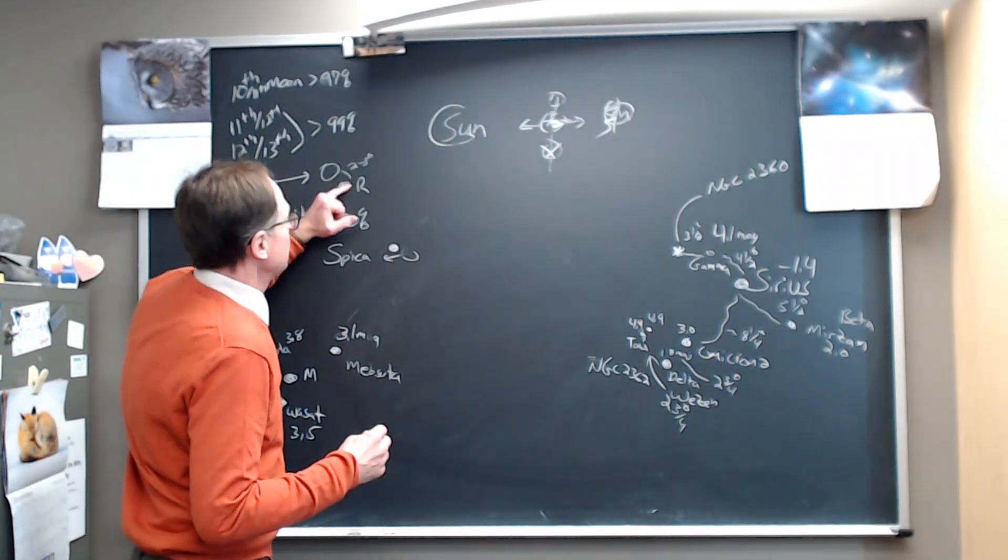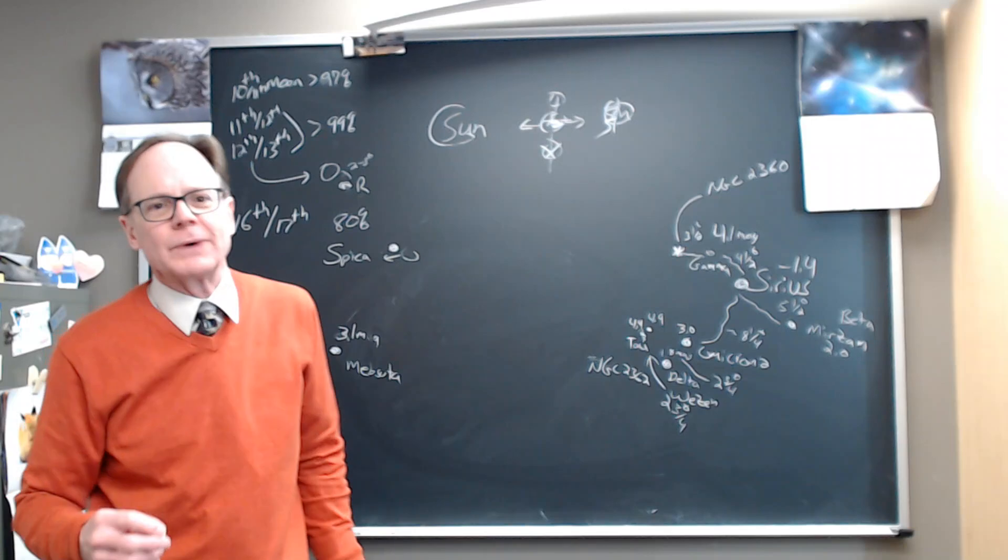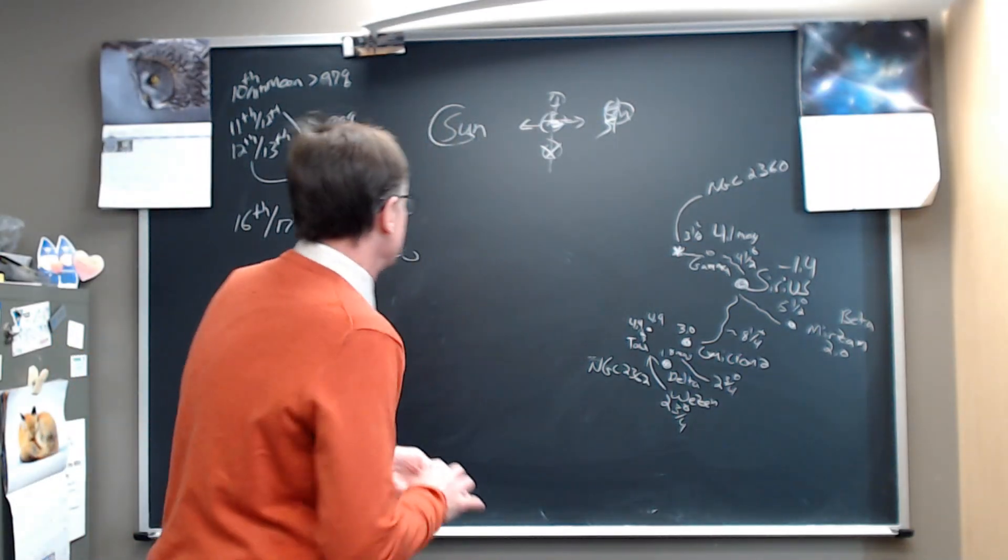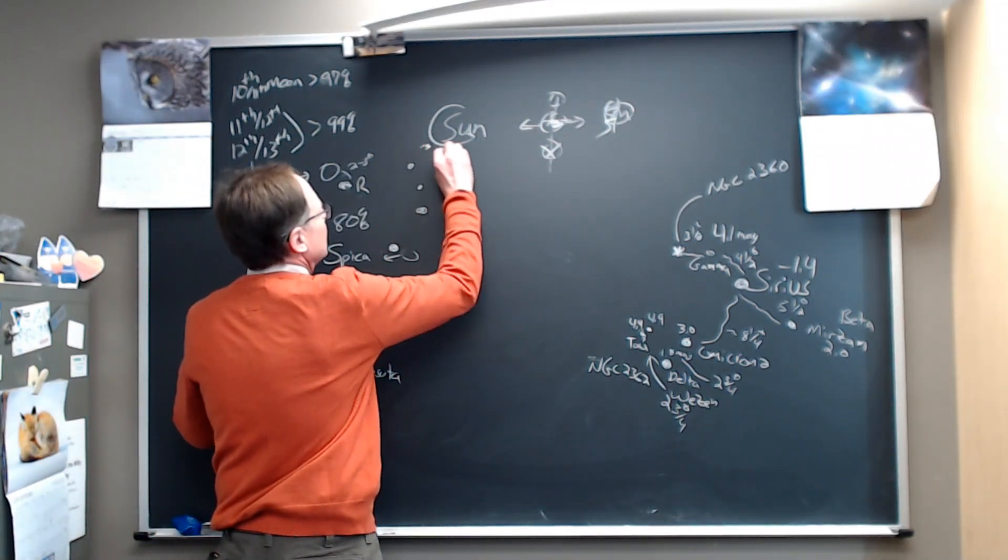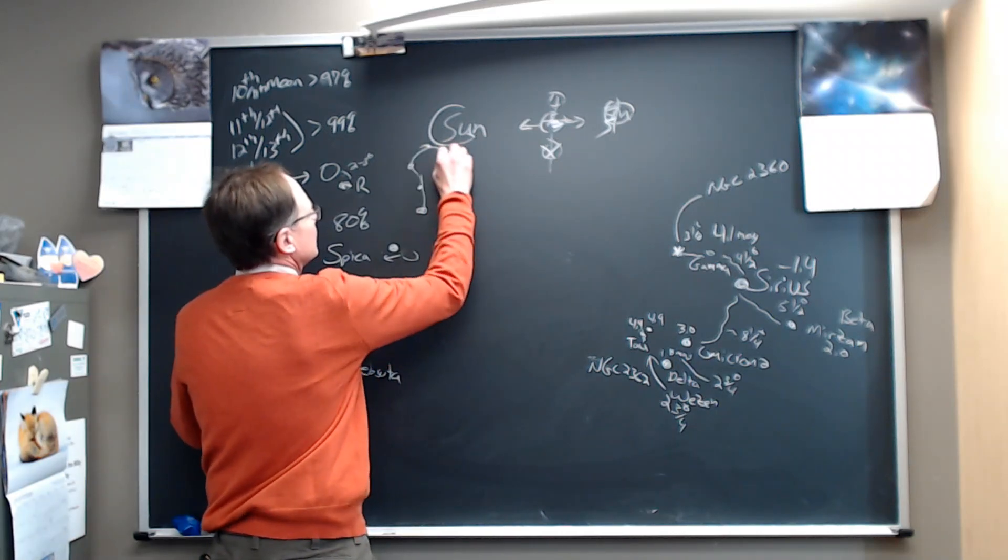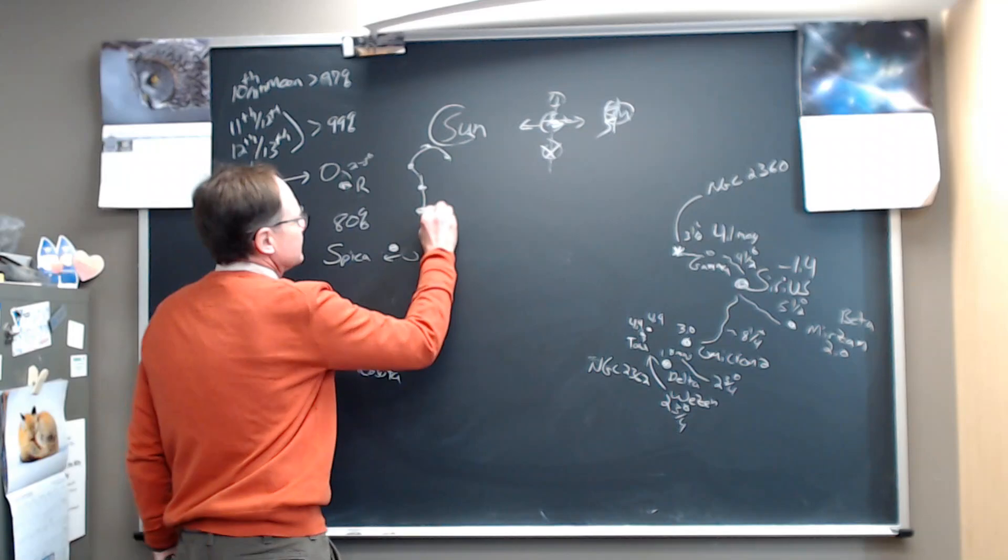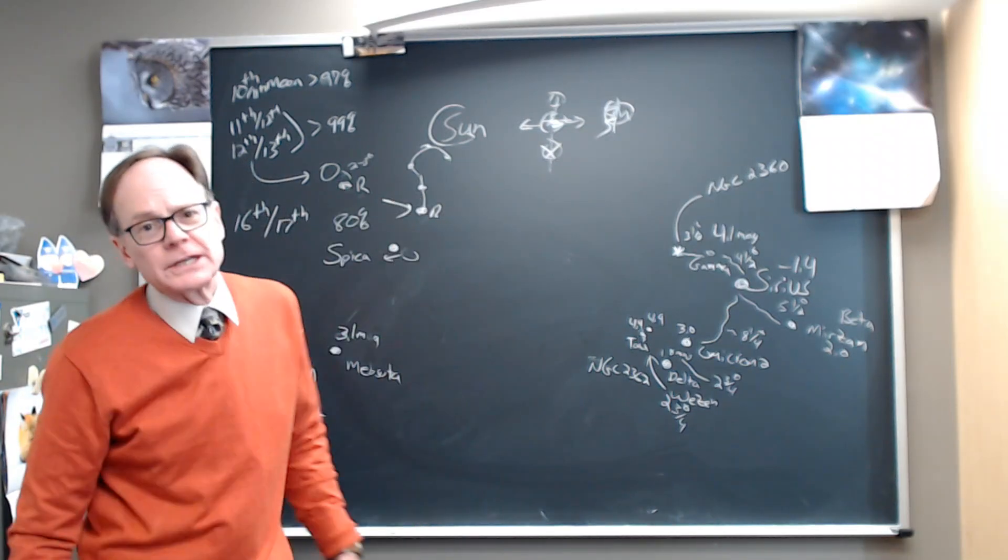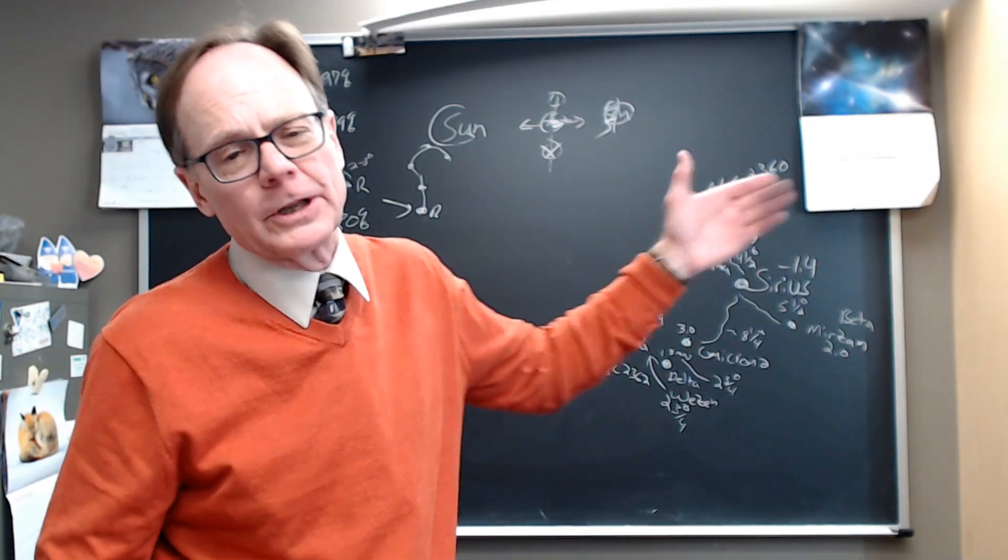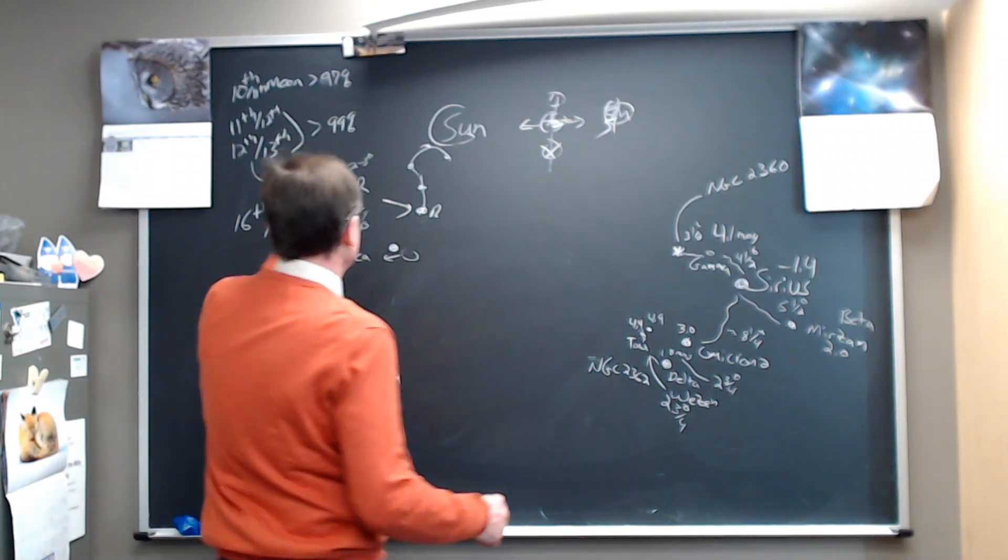Regulus is in the base of the sickle shape, the backwards question mark shape in Leo. So you've got that head of Leo out there, and Regulus is right there, and the moon's going to be within two degrees or so and be pulling away from it as the night goes on, two, three, four degrees.